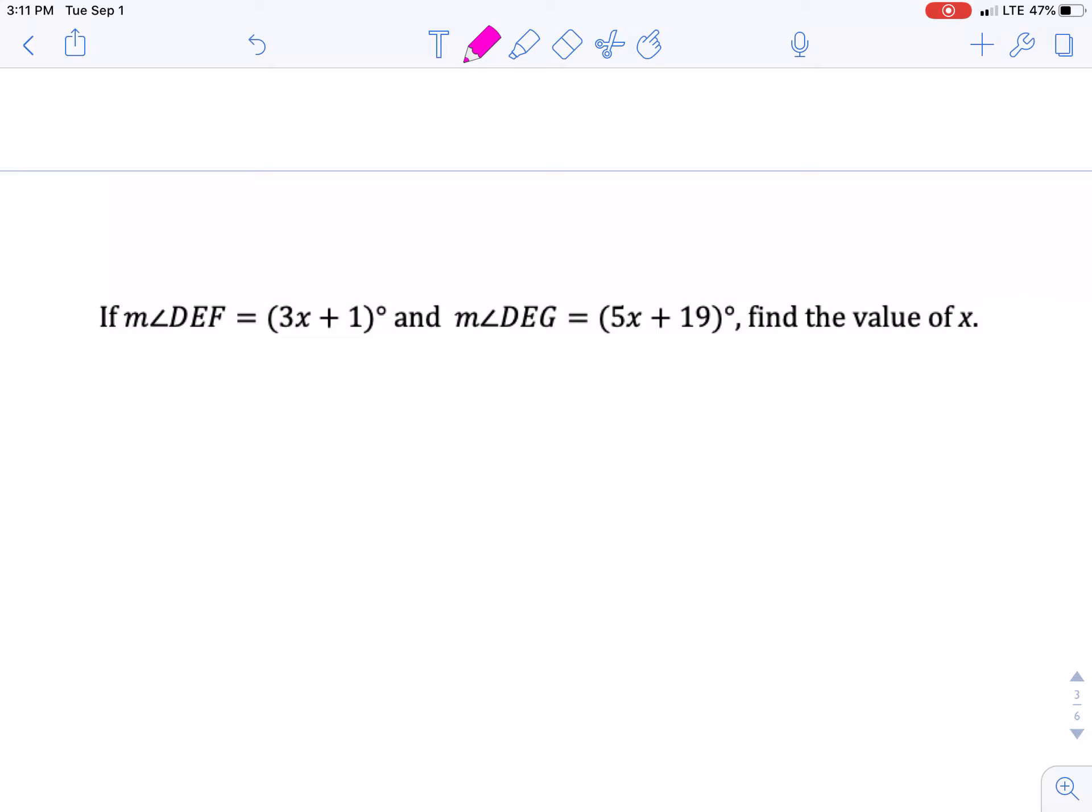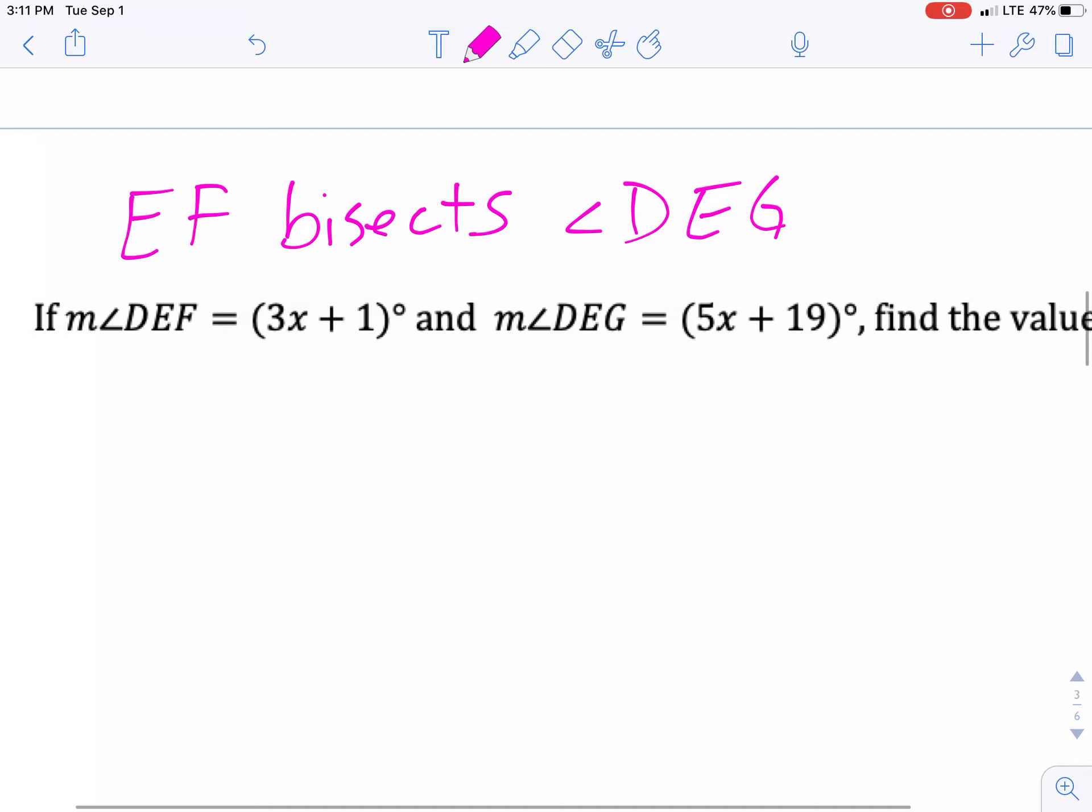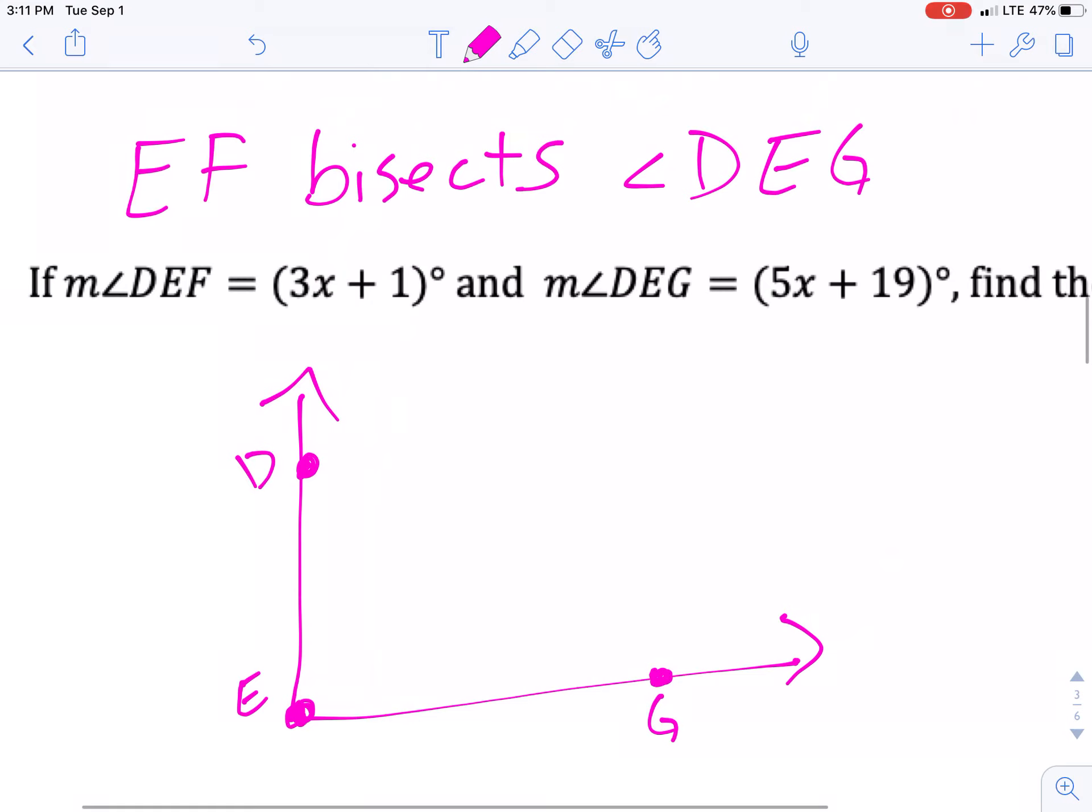All right. One thing that should be on here in the directions that I accidentally deleted is EF bisects angle DEG. And what I like to do when pictures aren't there is to draw one so you know exactly what you're looking at. Because EF is bisecting DEG, that makes DEG the whole angle. So that's D, E, and G. EF bisects, so we're going to draw in EF. Bam. What that does is it splits it up into two equal halves, and then we have to figure out, oh, and that's F out here.